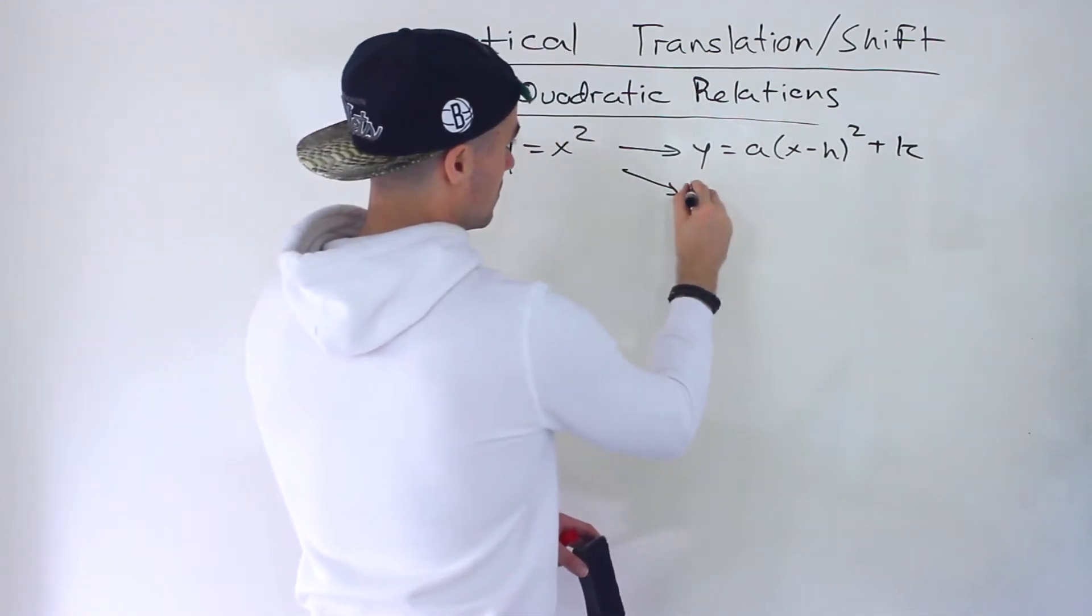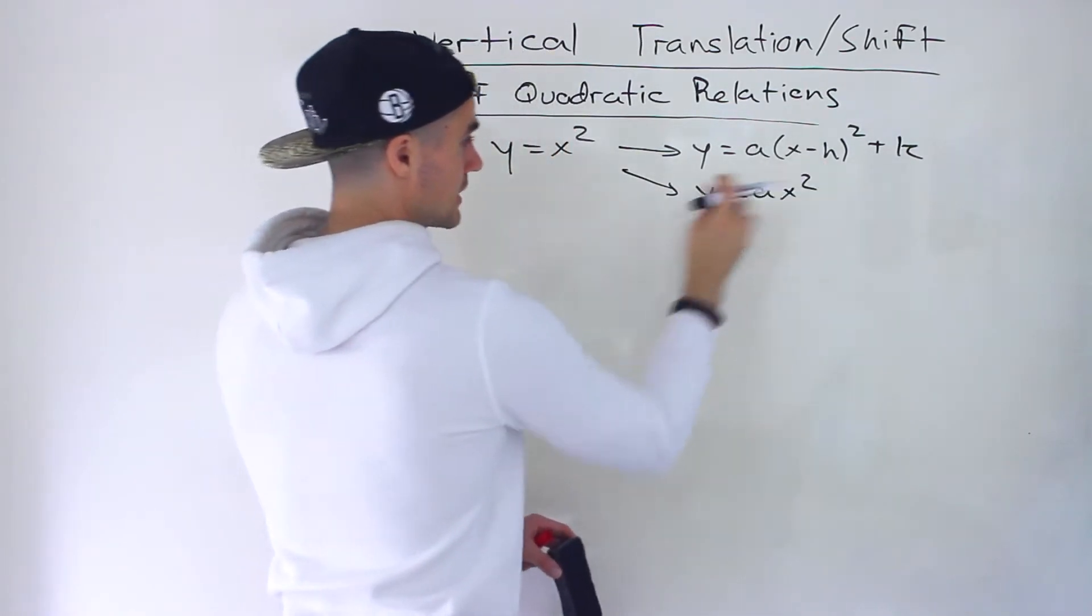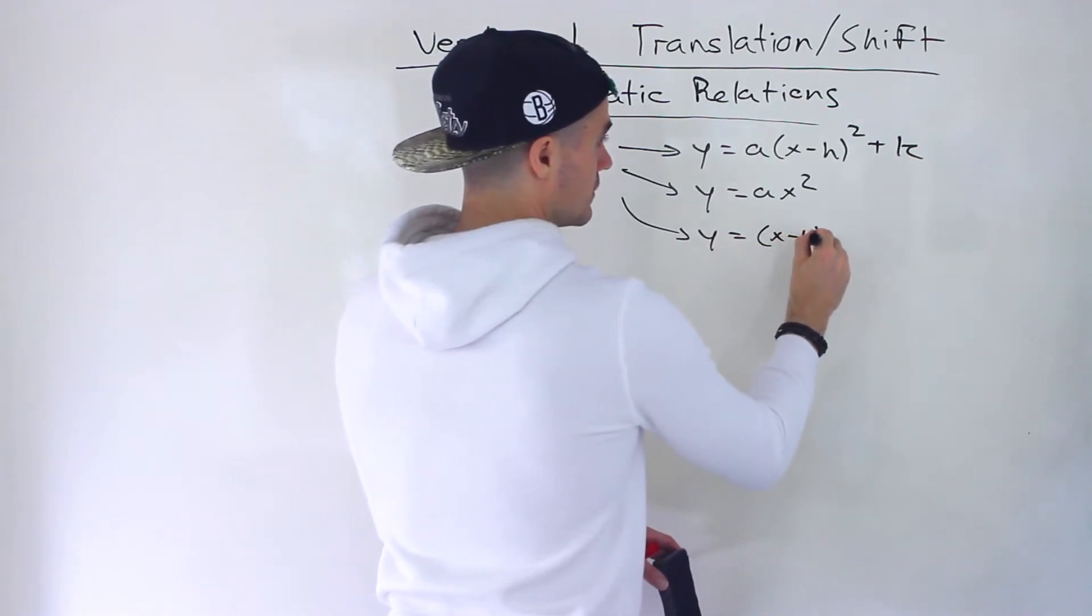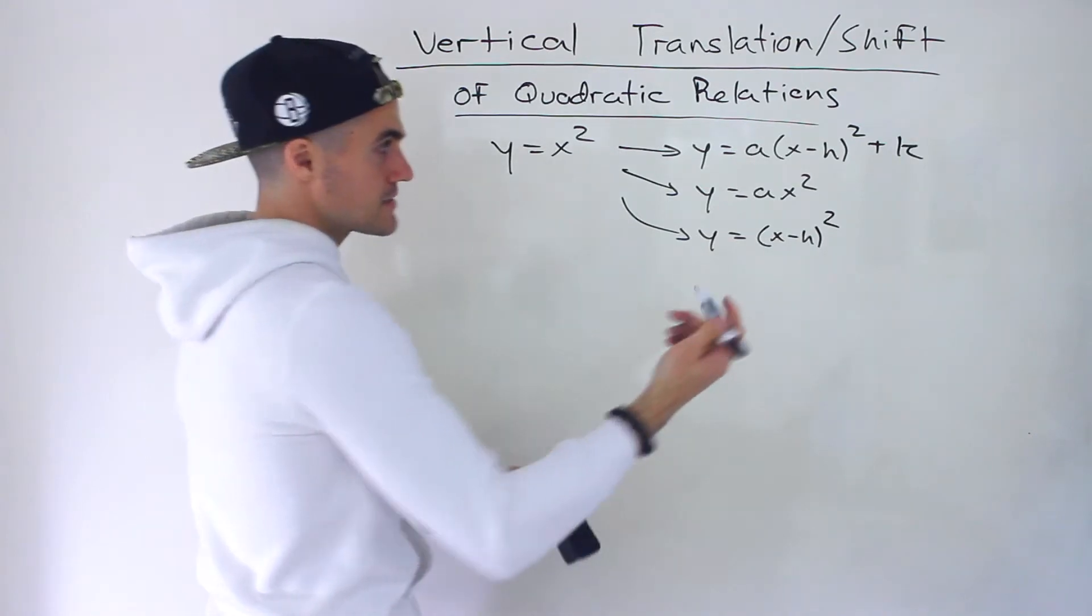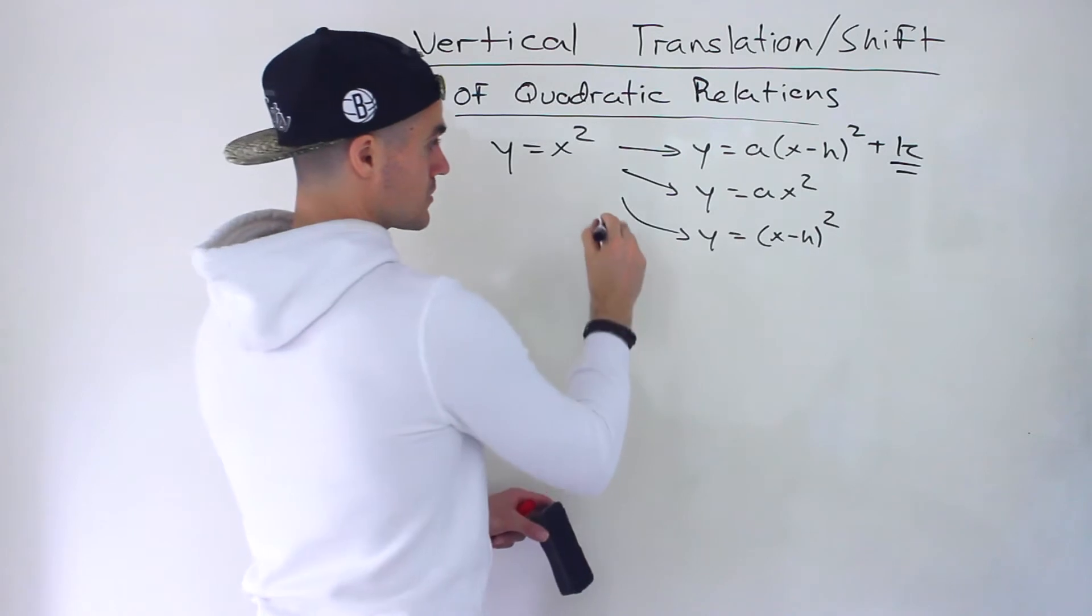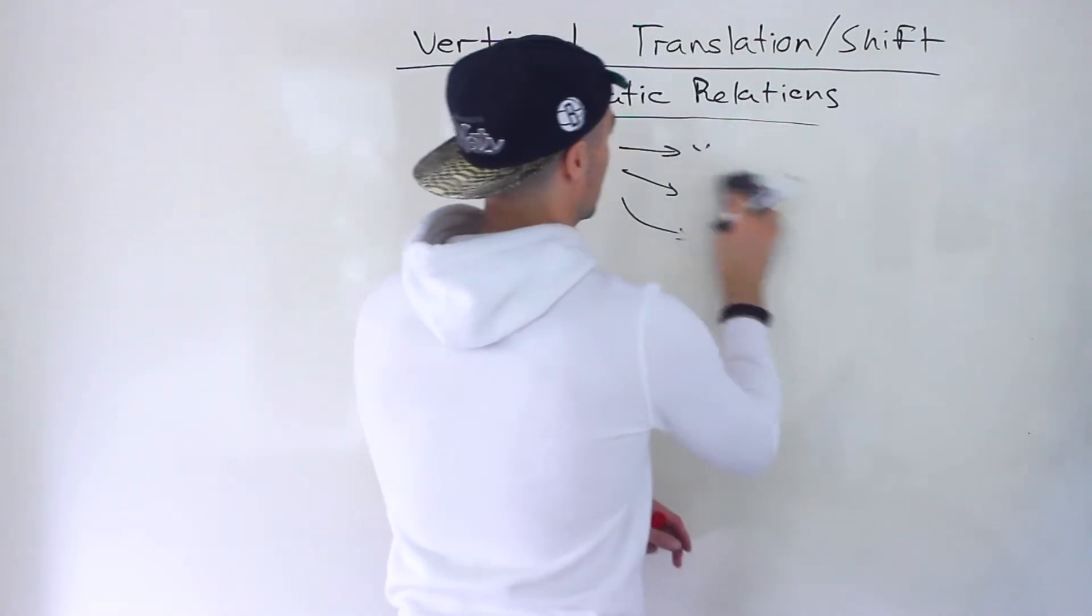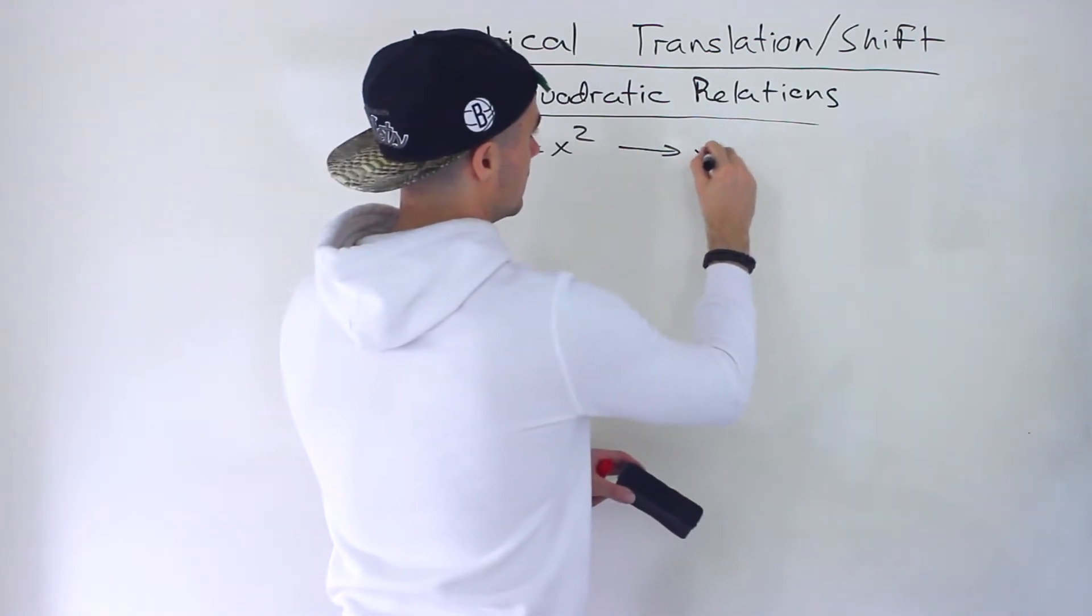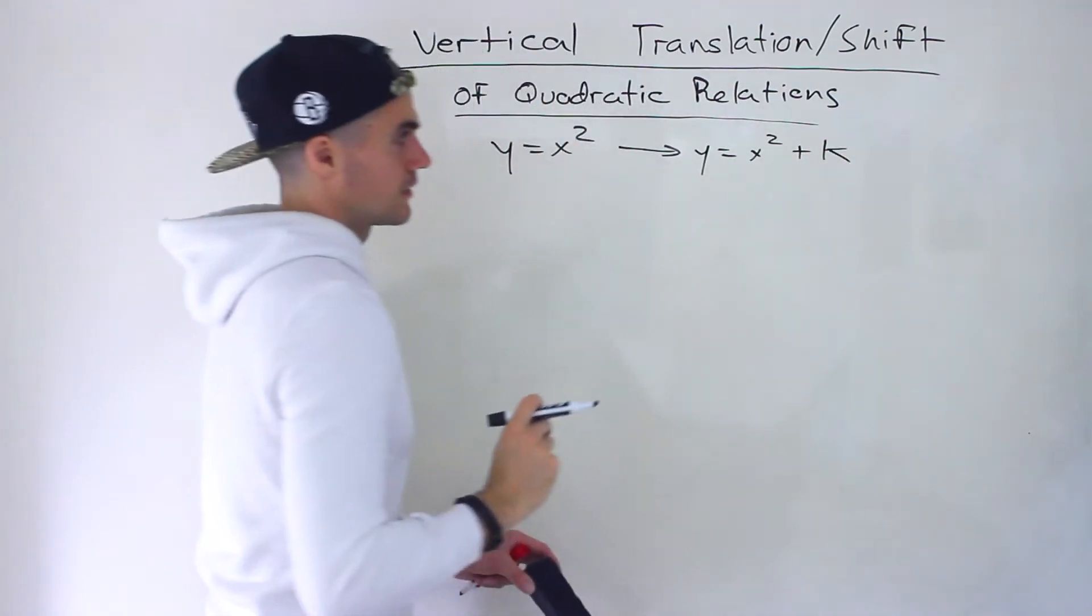Before we looked at the a value, then we looked at the h value separately in the previous video. Now, as you guessed it, we're going to look at the k value separately. What we're looking at in this video are quadratics in this format: y = x² + k.